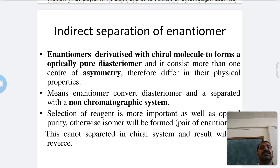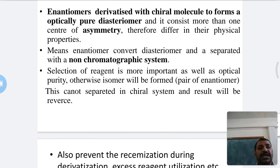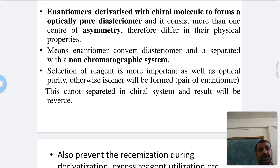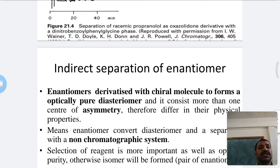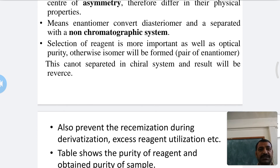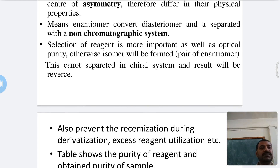Enantiomers convert to diastereomers and are then separated with a non-chromatographic system or by HPLC. This is indirect separation of enantiomers — conversion to diastereomers followed by separation. The selection of the chiral reagent is very important, and it must be optically pure.